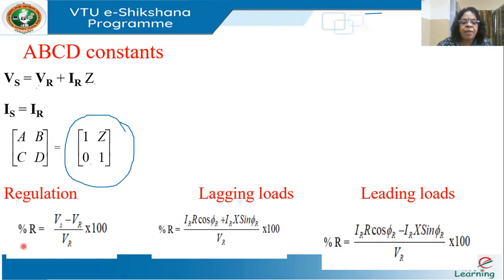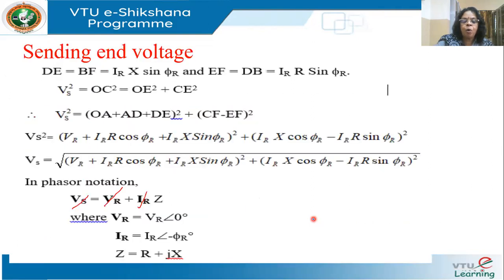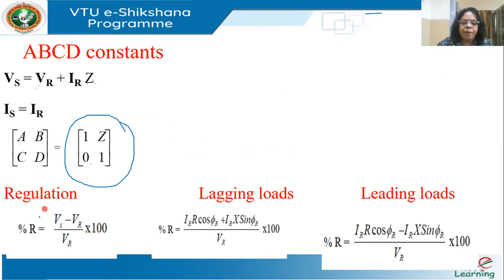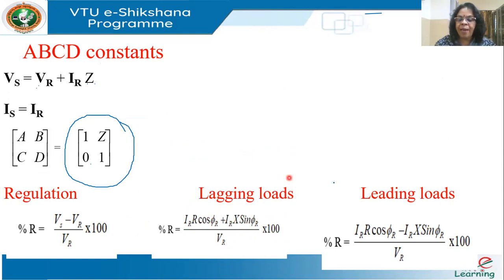Percentage regulation is defined as (VS − VR)/VR × 100. Using the approximate model, VS − VR ≈ IR·R·cos φR + IR·X·sin φR. So regulation ≈ (IR·R·cos φR + IR·X·sin φR)/VR × 100 for lagging loads. For leading loads the sign changes: regulation = (IR·R·cos φR − IR·X·sin φR)/VR × 100.